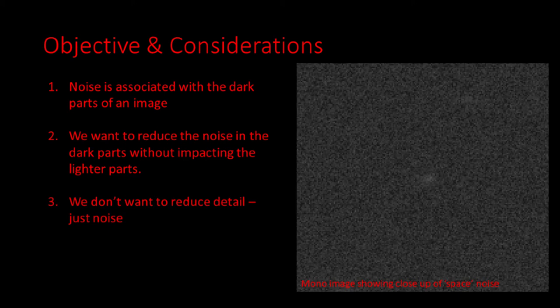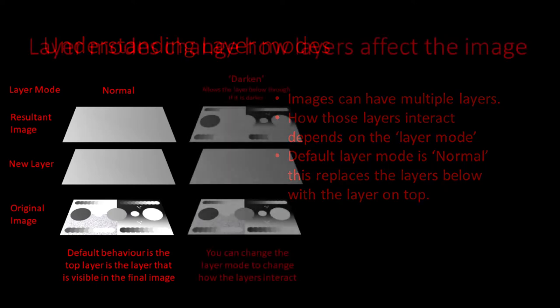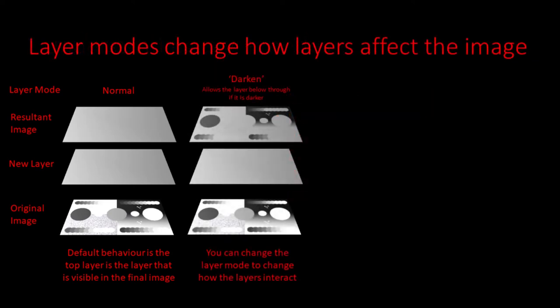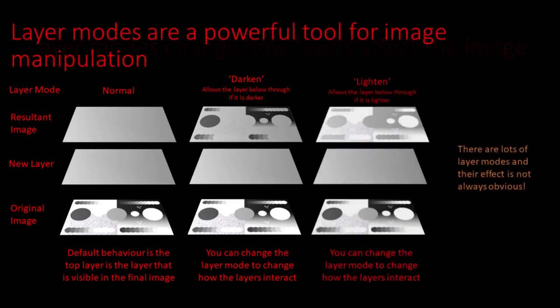Now we understand what we want to do, let's look at some of the underlying techniques we will need. Our images can have multiple layers, and how those layers interact depends on the layer mode. The default layer mode is called Normal, which replaces the layer below with the layer on top. Layer modes change how the layer interacts with layers below — for example, Darken allows darker pixels from layers below to pass through, and Lighten does the opposite, allowing lighter areas to pass through.